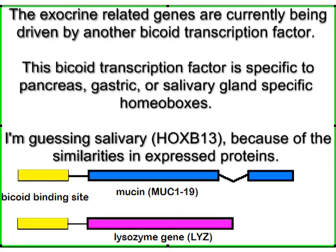Later duplication and divergence result in specialized homeobox genes for different processes in development — one of these is OTX1 in vertebrates. The exocrine-related genes are currently being driven by another bicoid transcription factor specific to, perhaps, salivary gland-specific homeoboxes such as HOX-B13, because of the similarities in expressed proteins.